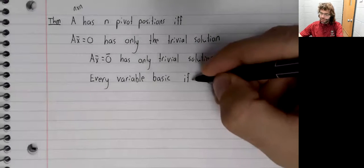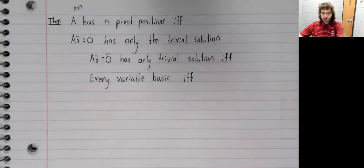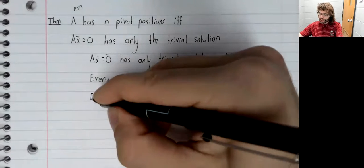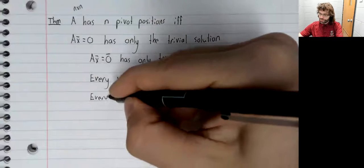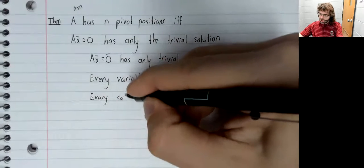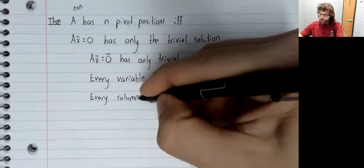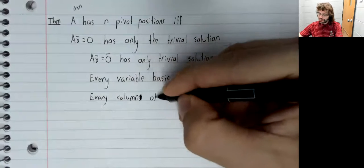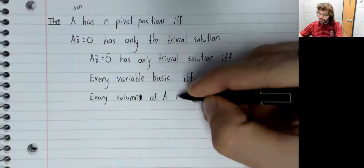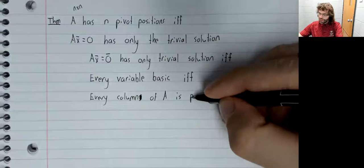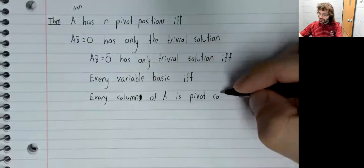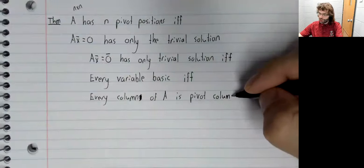Now variables are basic, if and only if their corresponding column is a pivot column.